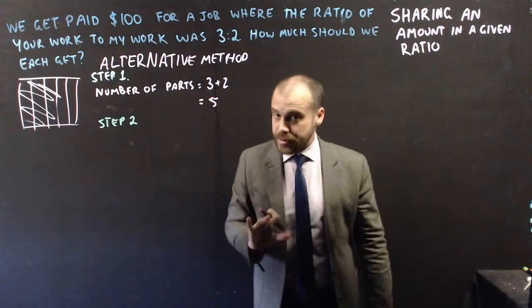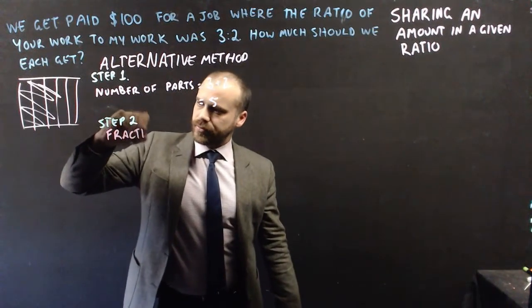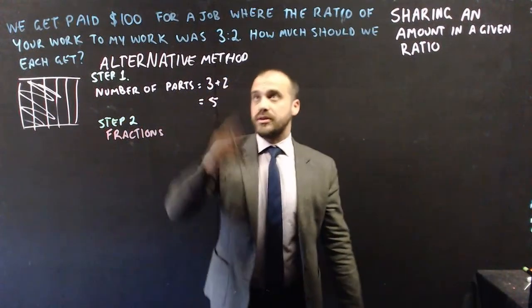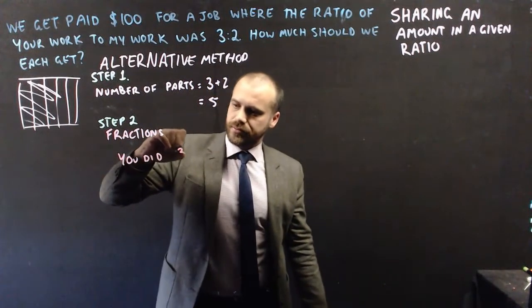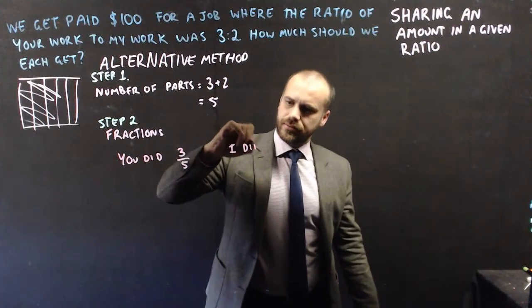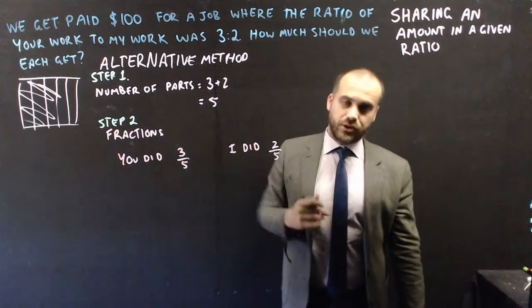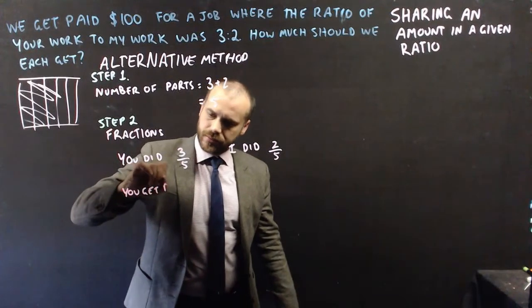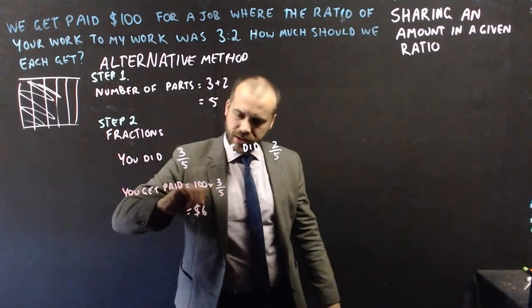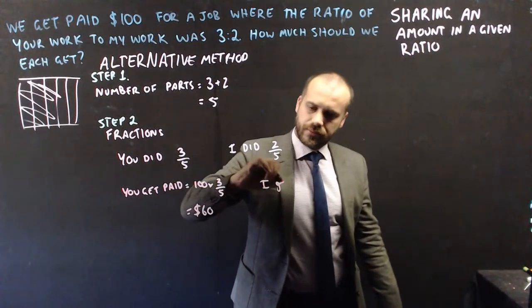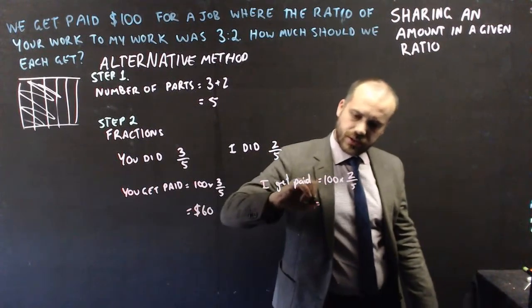Here's the alternative method — we'll get the same answer, just a different way. Find the number of parts: 5 total. Now find the fractions. You did 3 parts out of 5, so you did 3 fifths of the work. I did 2 fifths. We should each get paid that fraction of the total money. You get $100 times 3 fifths, which is $60. I get $100 times 2 fifths, which is $40.